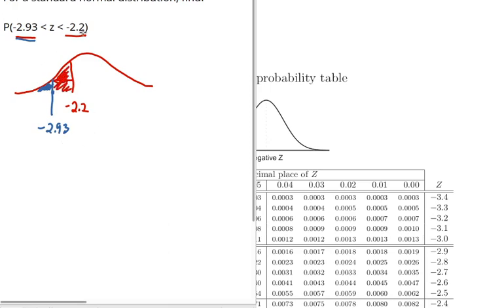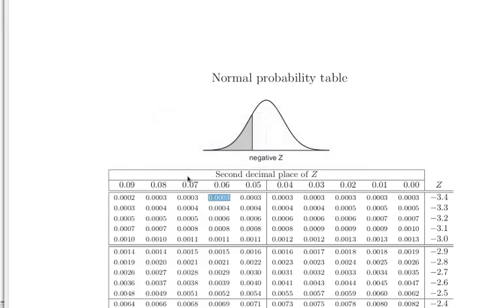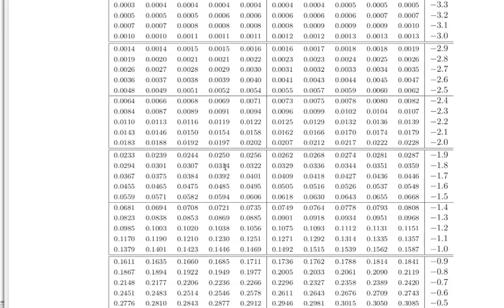So first off, let's get the area to the left of the bigger one, negative 2.2. Looking up negative 2.20, I find that the probability to the left, or the area to the left, is 0.0139.